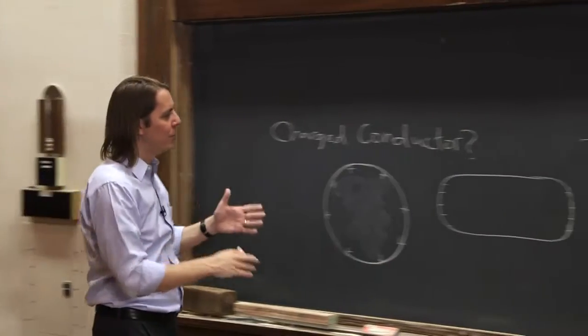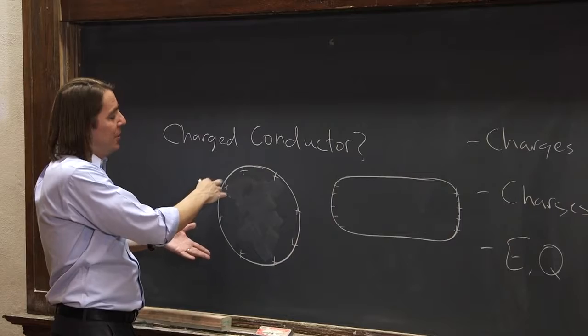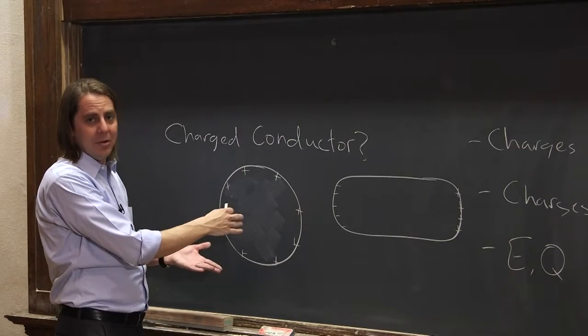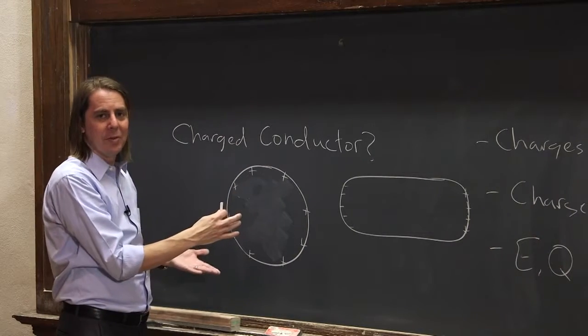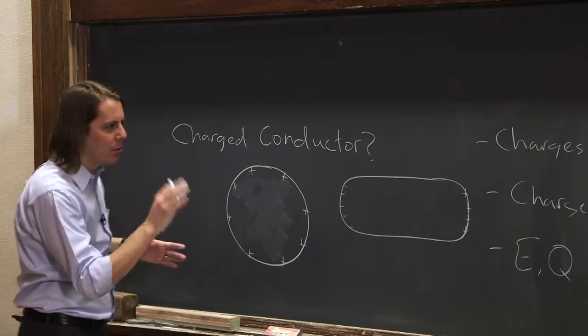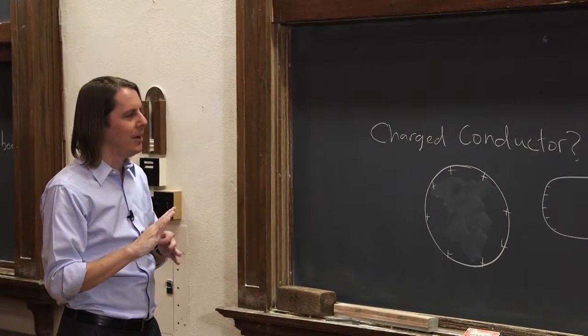And the reason is, if the field weren't zero, the charges would move. Where would they move? Well, they would move until when? Until the field is zero. The field has to be zero in the metal because that's the only way the charges can stop moving. So we're going to keep working with that idea. But definitely keep that in your head, is that the field inside the metal has to be zero.